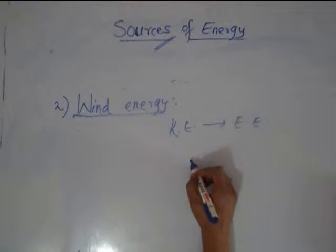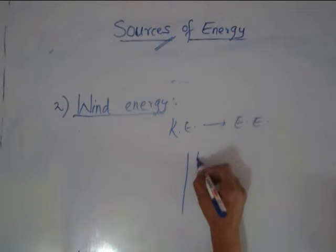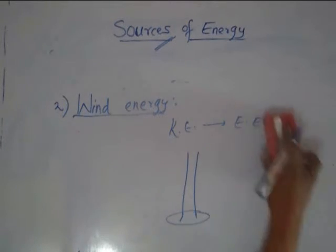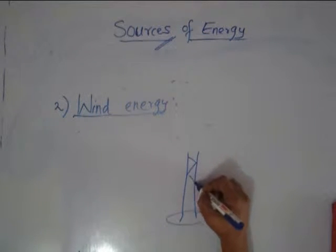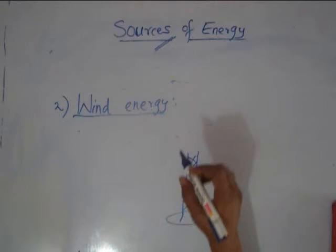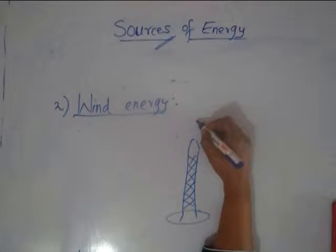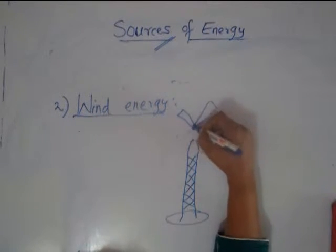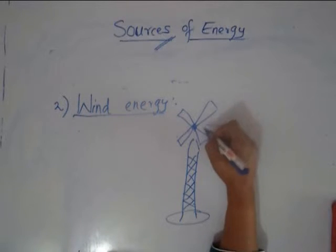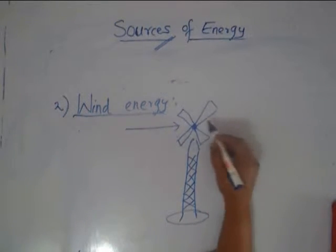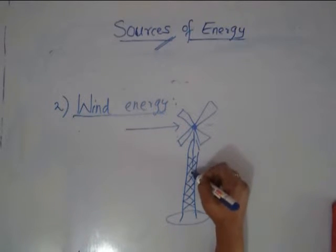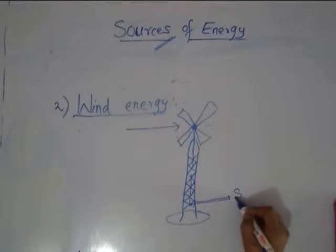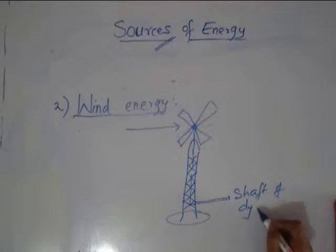Basically, the structure consists of a tall tower — it is very high for the simple reason that a lot of wind can be captured at a height. On this tower is attached a fan with very large blades. The wind hits the blades and rotates the fan, and the axle of the fan is connected to the shaft of the dynamo — it is as simple as that.